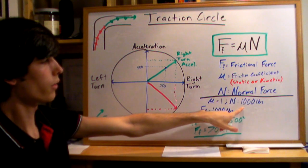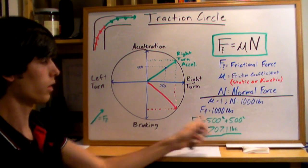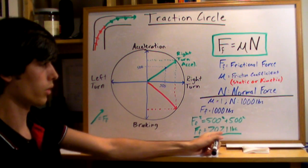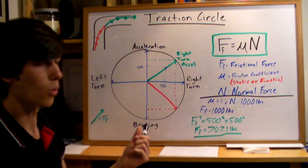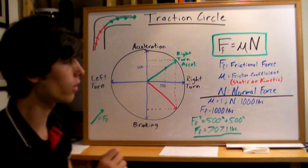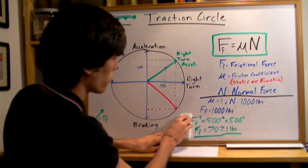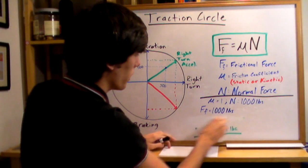We've got 1,000 pounds of frictional force that we can use. So if we're only going to use 707.1 pounds of frictional force, then we can accelerate harder, and we can turn harder in that same turn. Let's find out what the limit would be.